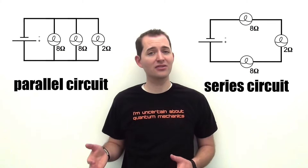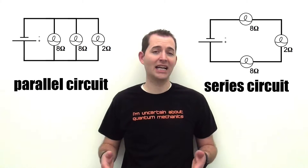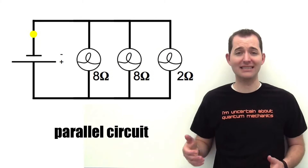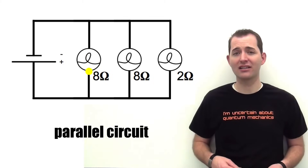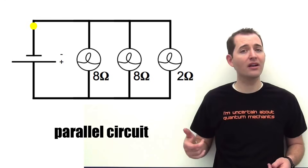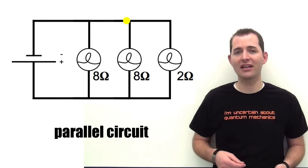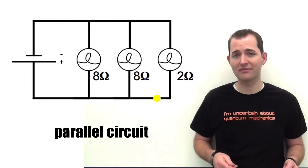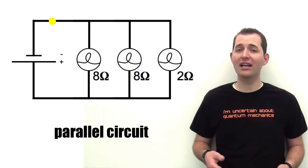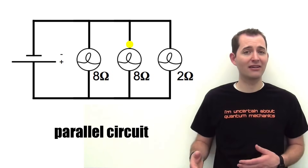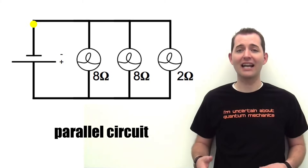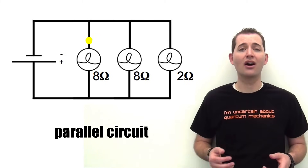Now if we compare this to a circuit of all the same components but connected in parallel, we can see a key difference. That single charge will only pass through one branch or one of our bulbs in our parallel circuit each time it passes through the circuit. In our parallel circuit each bulb has its own branch or connection to the voltage source or battery, whereas in the series circuit all of our bulbs were connected together and had the same connection to our battery.